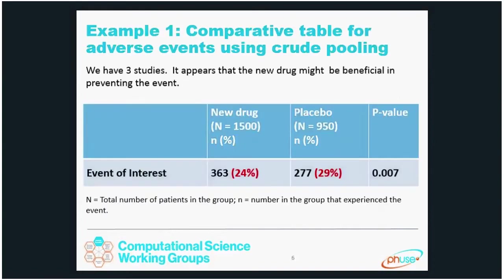Here's an example from three studies. For some event of interest — you've all seen tables like this, but usually you have a few hundred events, not just one — in the new drug arm, 363 out of 1,500 patients had the event for a 24% incidence, and in placebo we had 29% of patients have the event. The crude p-value is just .007, which gives some idea that perhaps this drug is even beneficial with respect to this event.